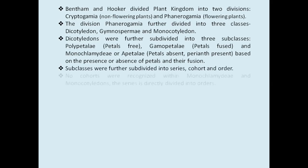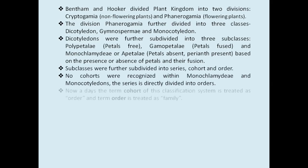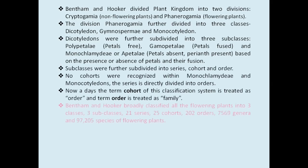The subclasses were further subdivided into series, cohorts, and orders. No cohorts were recognized within Monochlamidae and Monocotyledons; the series is directly divided into orders. Nowadays the term cohort of this classification system is treated as order, and the term order is treated as family.